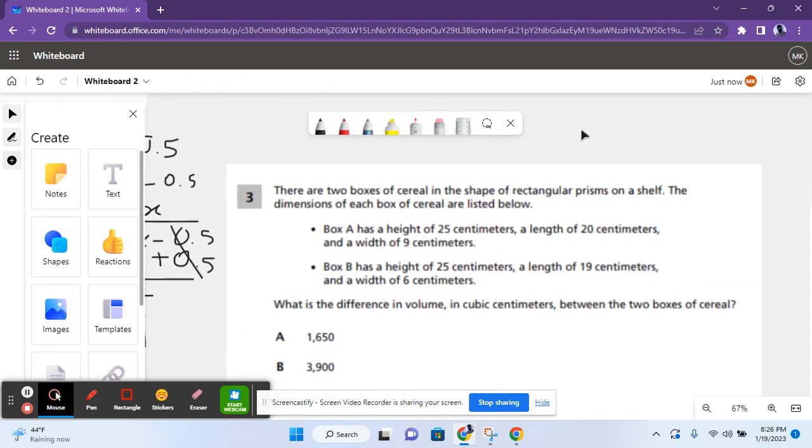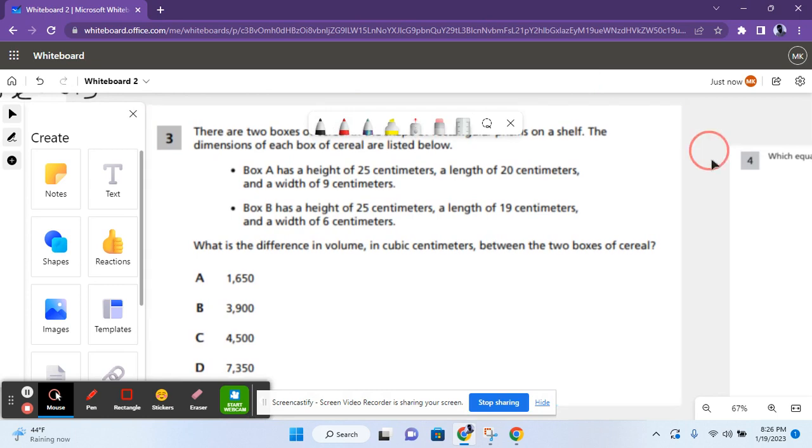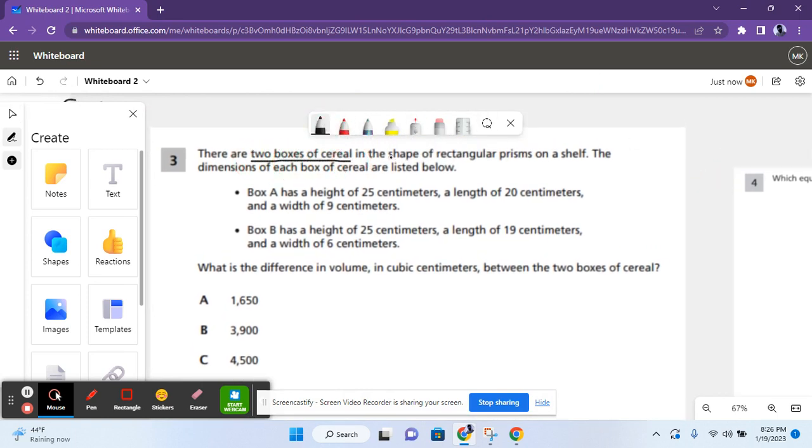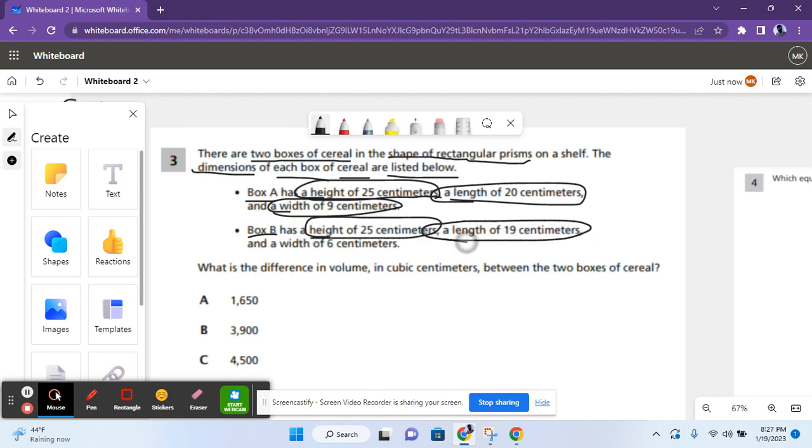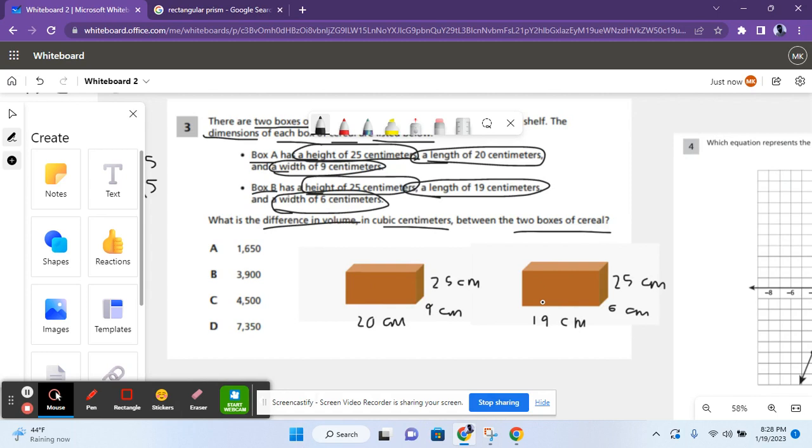Let's move on to the next problem. For question 3 it says there are two boxes of cereal in the shape of a rectangular prism on a shelf. The dimensions of each box of the cereal are listed below. Box A has a height of 35 centimeters, a length of 20 centimeters, and a width of 9 centimeters. Box B has a height of 25 centimeters, a length of 19 centimeters, and a width of 6 centimeters. What is the difference in volume in cubic centimeters between the two boxes of cereal? So you have both of these rectangular prisms and they have all the dimensions. To find the volumes of these rectangular prisms you have to do area equals length times width times height. So you basically multiply all the dimensions together.